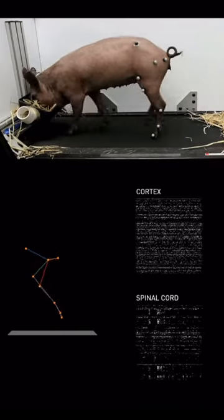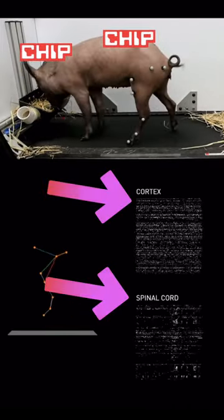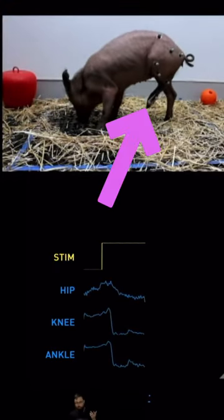But even after all this maybe the coolest thing is that they had two chips in this pig, one in its brain and one in its spine. And then they sent signals to the pig's spine chip and it raised its leg.